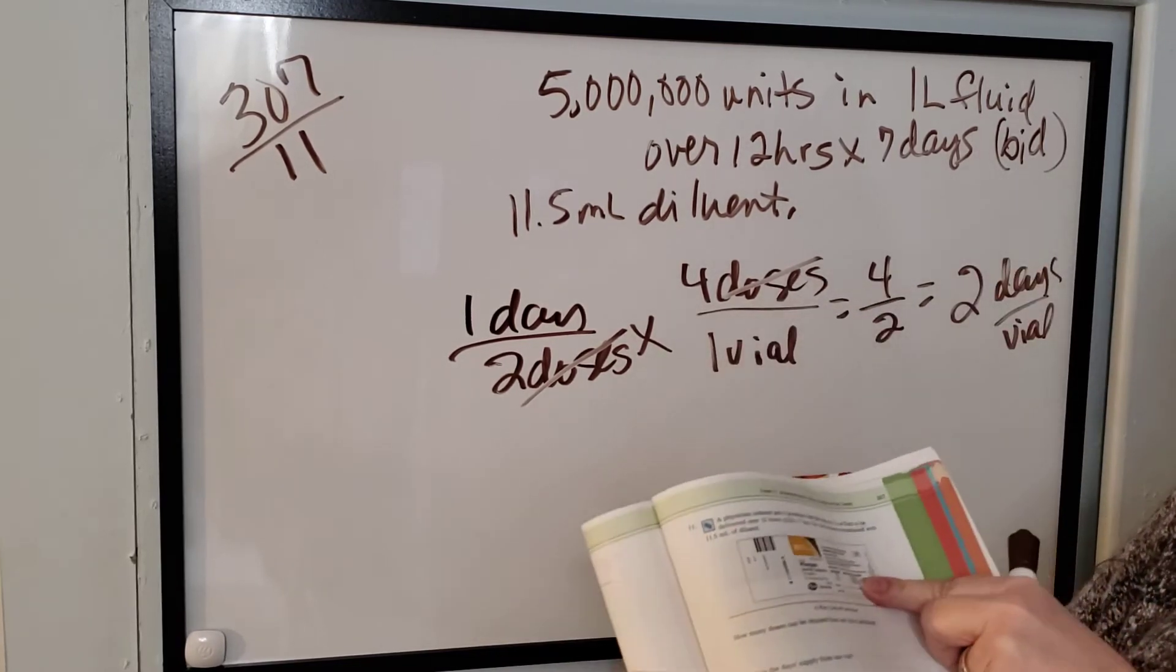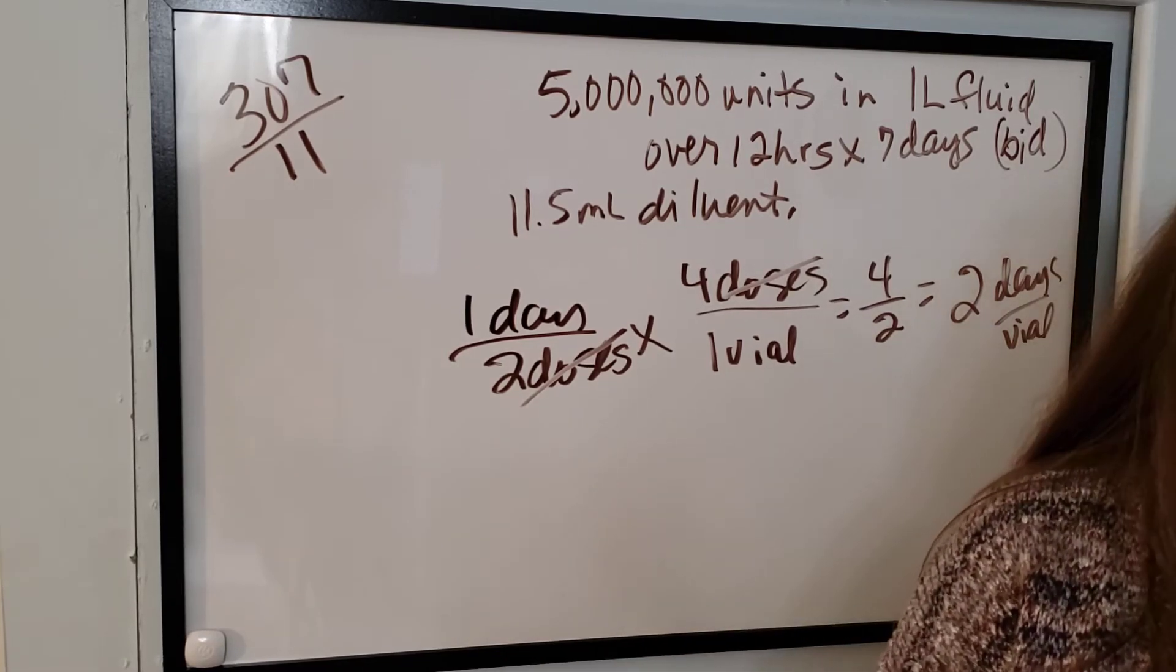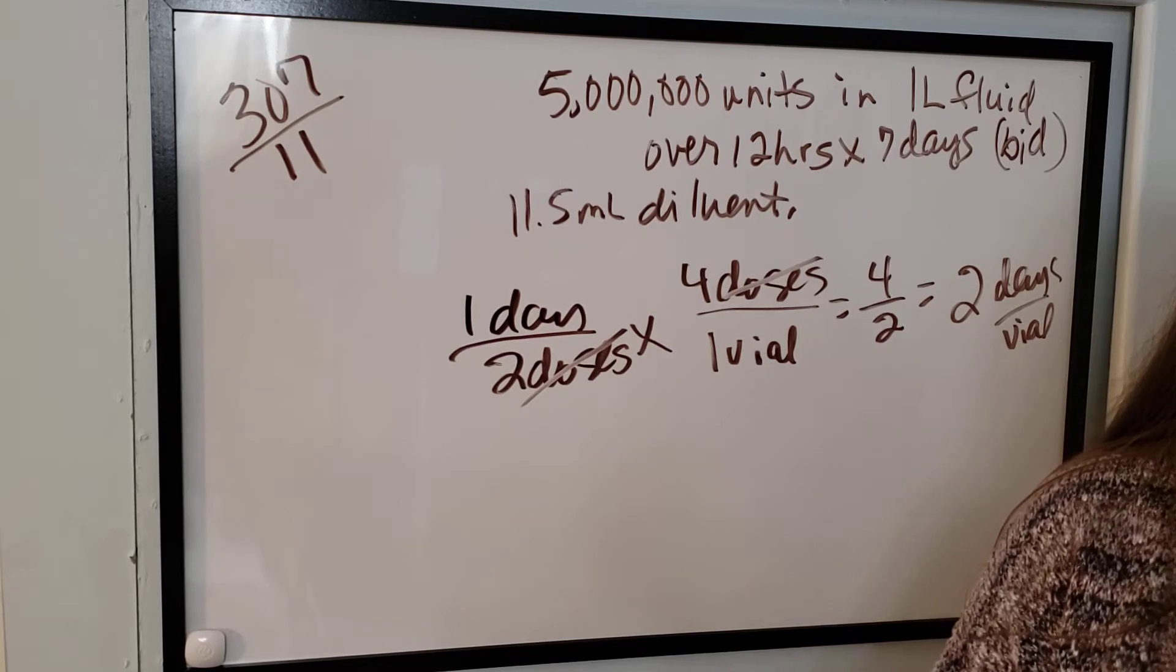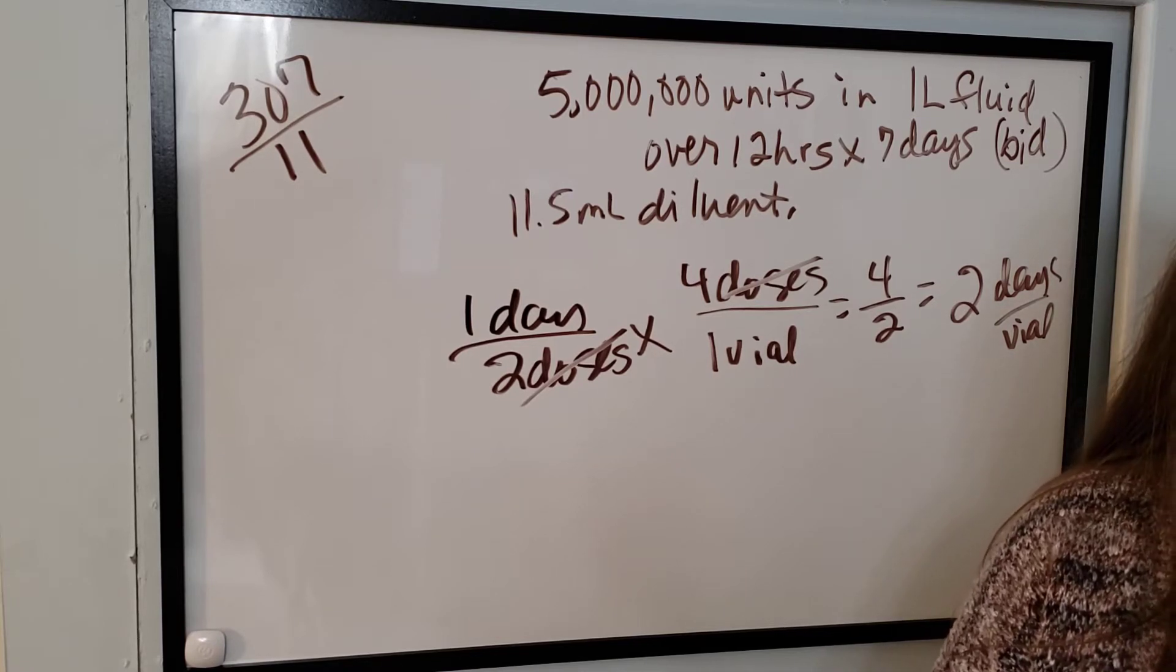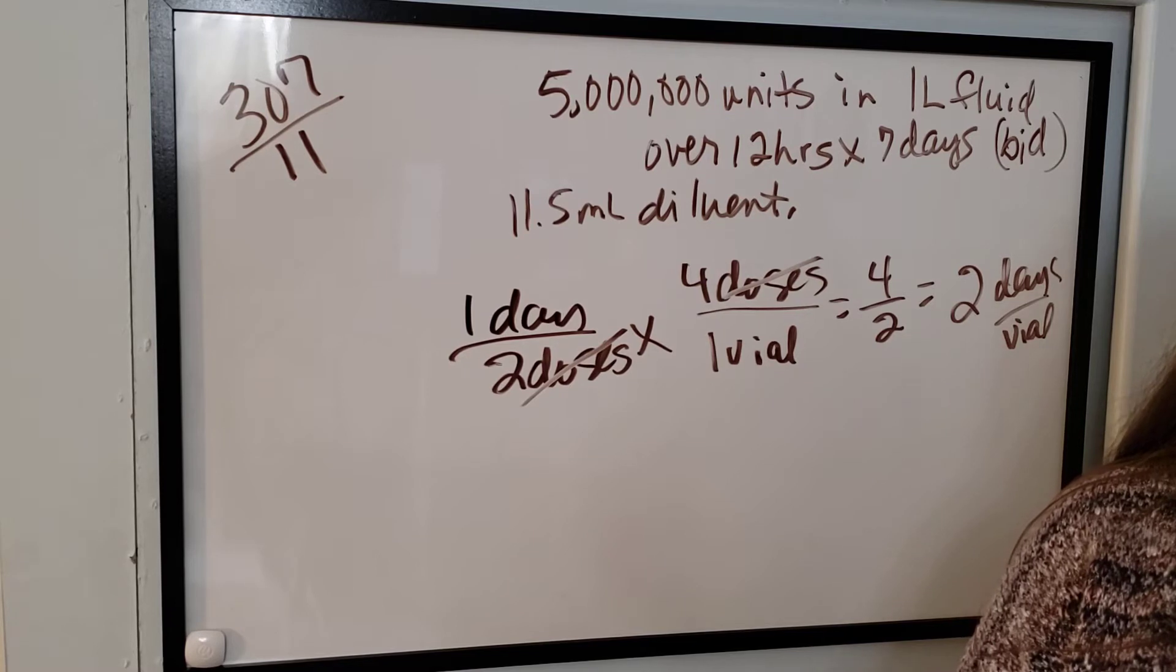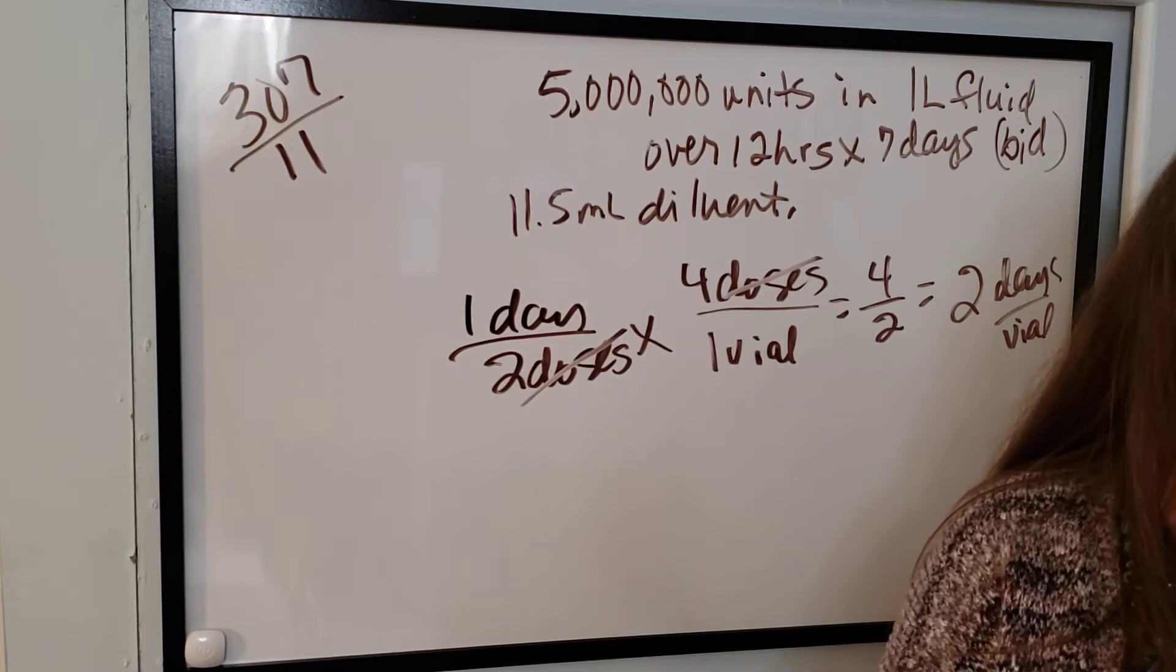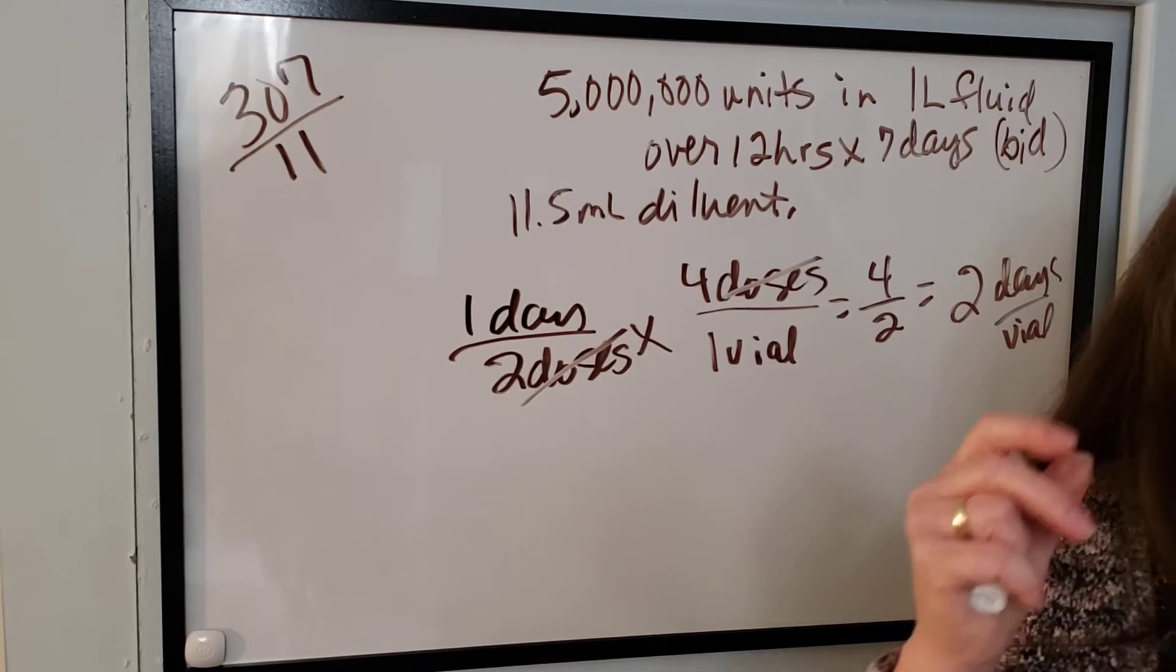Okay? So if you add, it basically tells you, if you add 75 milliliters to the bottle, you're going to get 250,000 units per milliliter. And then the next one is 33 will give you 500,000. And 11.5 milliliters will give you 1 million units per milliliter. Okay? One million units per milliliter.